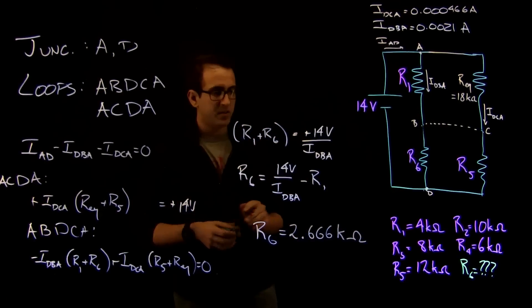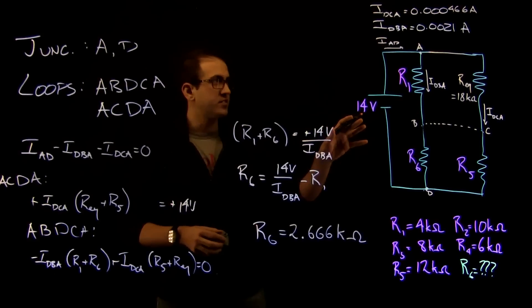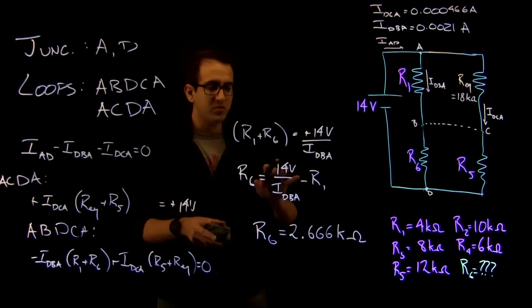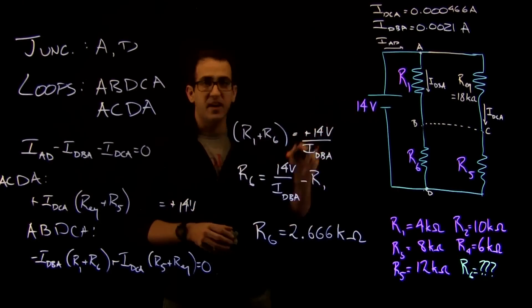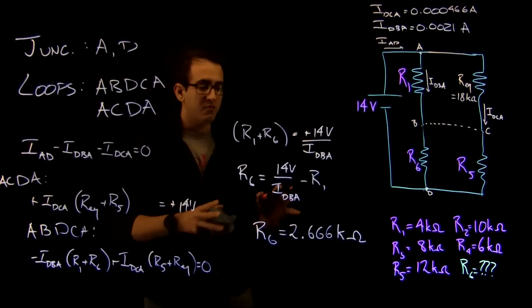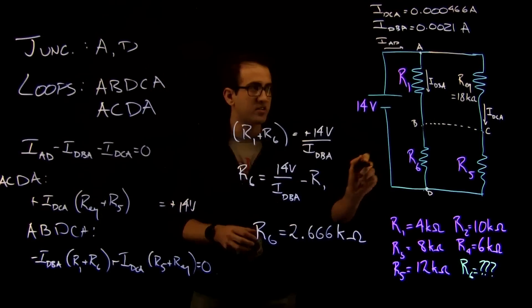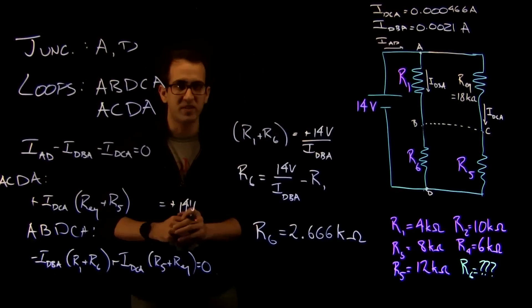And there we go. Given Kirchhoff's laws, we were able to rearrange, at times using things we already knew about this problem, we were able to find the resistance R6 that produces a balanced Wheatstone bridge.